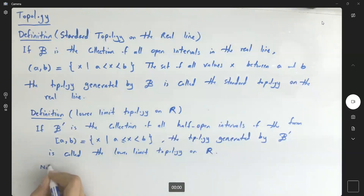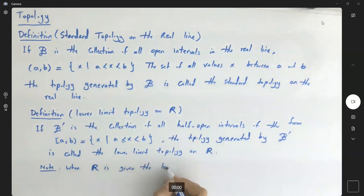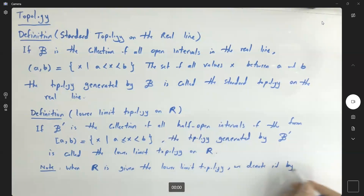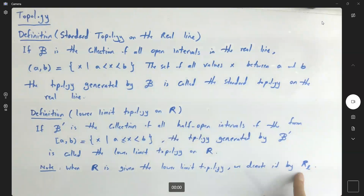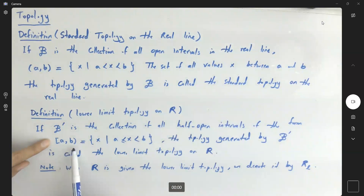Just a quick note: the lower limit topology is denoted by R sub L. So R sub L is the topology generated by B prime, which includes all half-open intervals of the form [a, b).